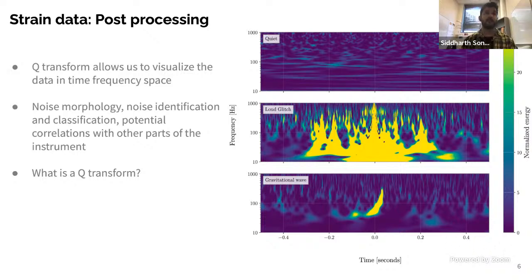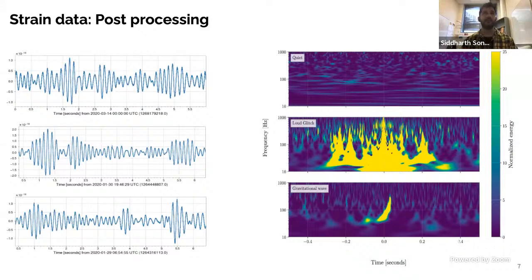Q-transform also helps us find potential correlations with other parts of the instrument. If you see a loud glitch in the primary gravitational wave channel and a similar-looking glitch in another part of the detector, there may be a connection. To summarize: we started with the raw time series, which didn't help much, but then we applied whitening, bandpassing, and Q-transform, and we end up with something a lot more useful.